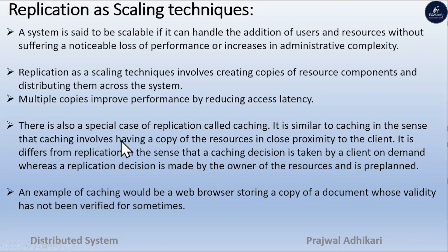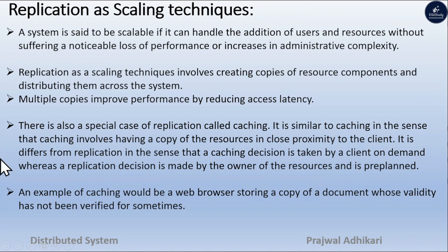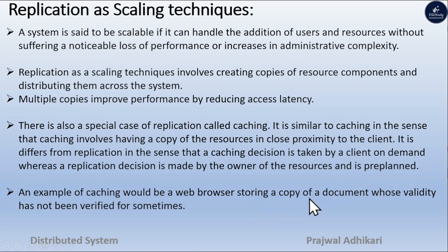There is also one special case of replication which is called caching. It is similar to replication in the sense that caching involves having a copy of a resource in close proximity to the client. It is different from replication in the sense that a caching decision is taken by the client on demand, whereas a replication decision is made by the owner of the resource and is pre-planned. An example of caching is a web browser storing a copy of a document whose validity has not been verified for some period of time.